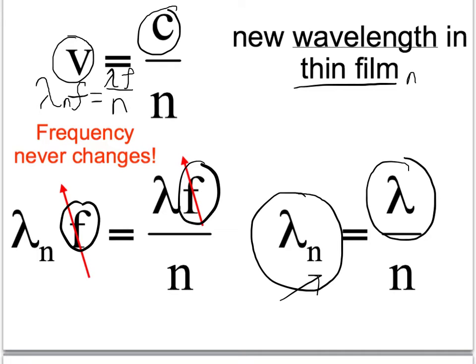So if you want to know the wavelength in the thin film, you just divide the wavelength of the light in a vacuum, which will depend on the color of light we're talking about. So like green would have one wavelength in a vacuum, red would have a different wavelength in a vacuum. You take the original wavelength in a vacuum, divide it by the index of refraction, and you have the new wavelength in the medium.